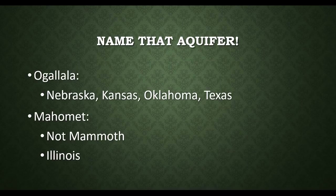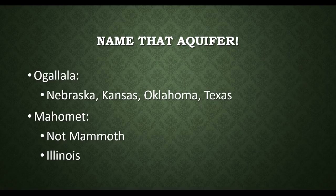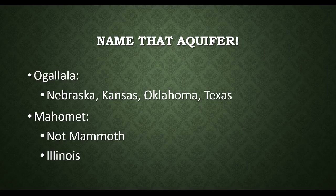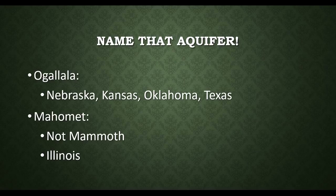Geologists, the scientists who study rocks and minerals, often give names to aquifers. For example, the Ogallala aquifer is one of the largest in the United States. If you live in Nebraska, Kansas, Oklahoma, or Texas, you may get your water from the Ogallala. However, if you live in Illinois, you may get your water from the Mahomet aquifer — and it's pronounced Mahomet, not Mammoth.